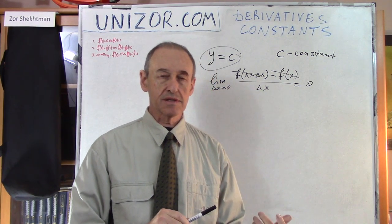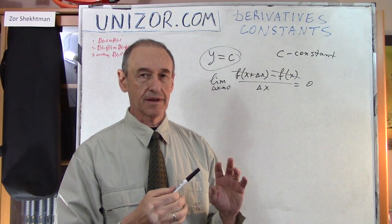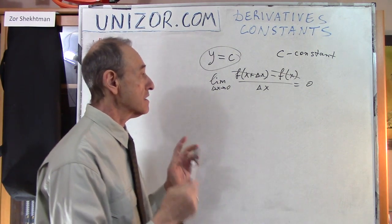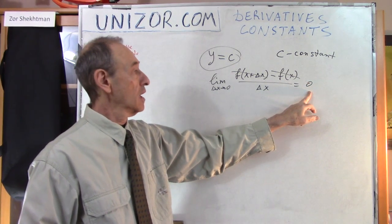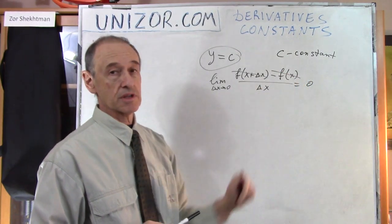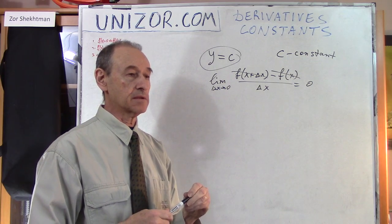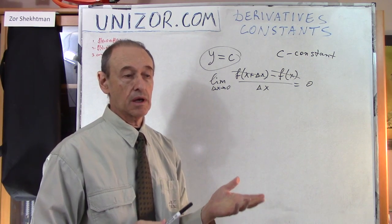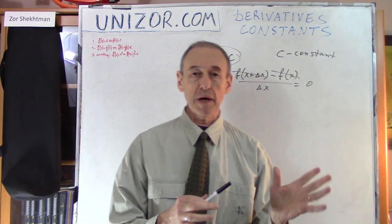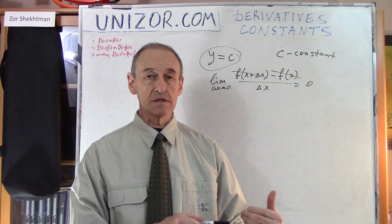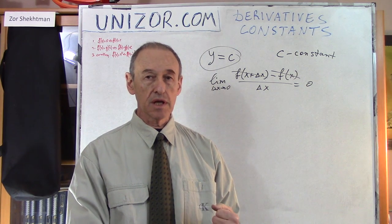But what's interesting is whether a converse theorem takes place. Which means: if the derivative of the function is equal to zero, is it true that the function is constant? This is a much less obviously trivial fact and it requires a certain proof. And that's what I'm going to do today — prove that the function is constant if its derivative equals zero.